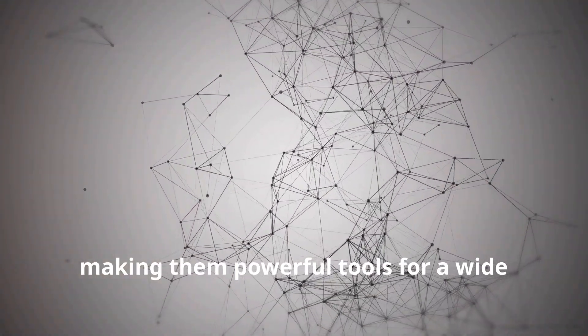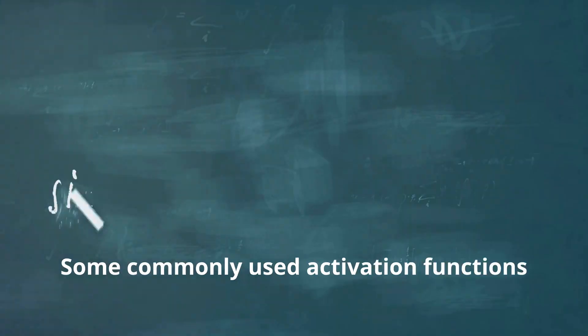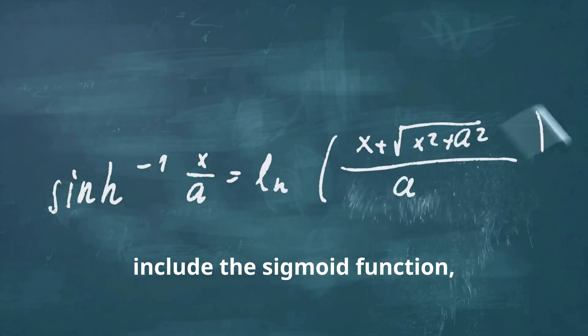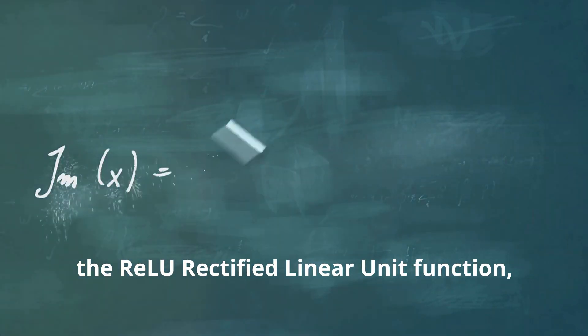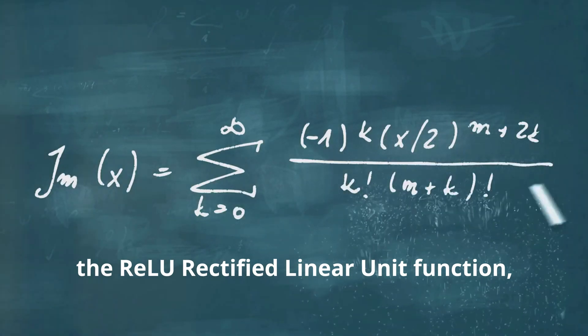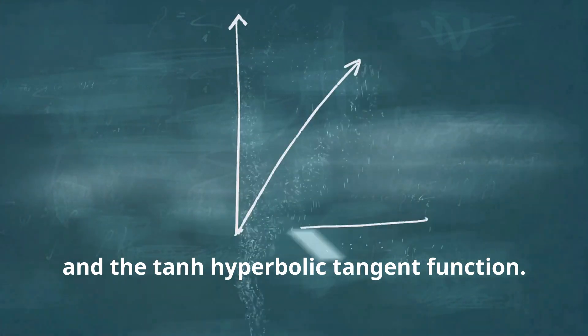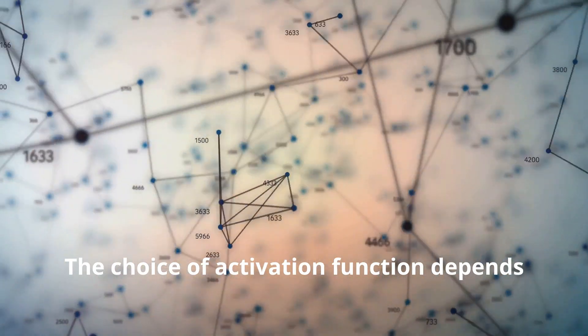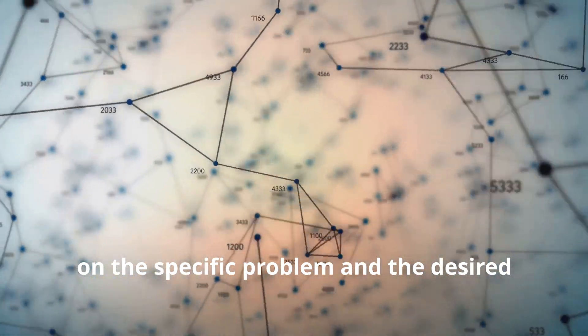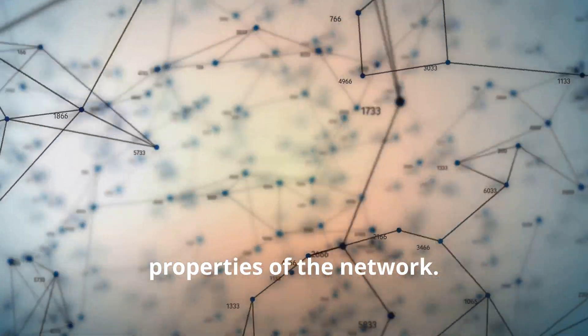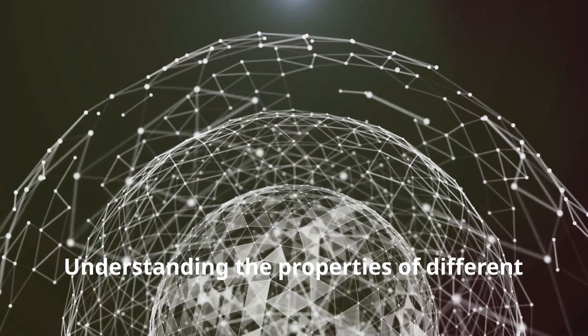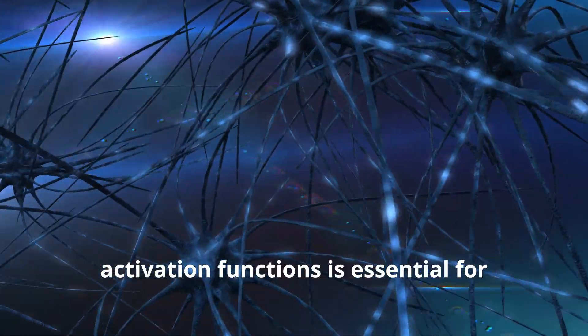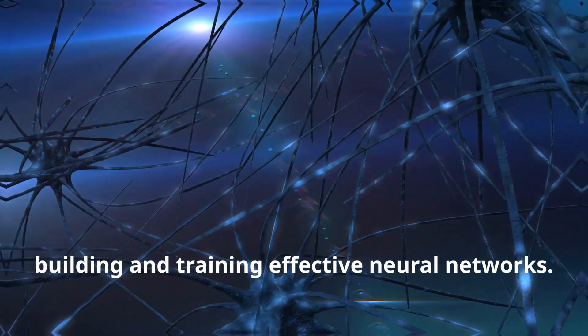Some commonly used activation functions include the sigmoid function, the ReLU, rectified linear unit function, and the tanh, hyperbolic tangent function. The choice of activation function depends on the specific problem and the desired properties of the network. Understanding the properties of different activation functions is essential for building and training effective neural networks.